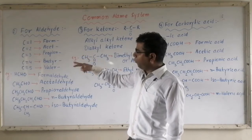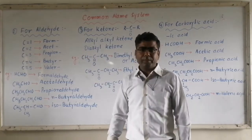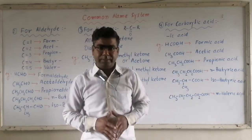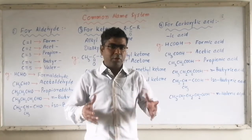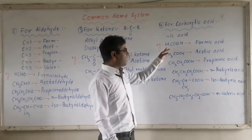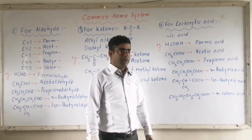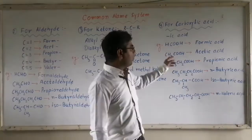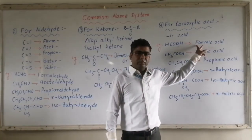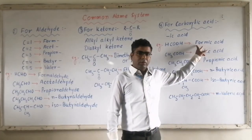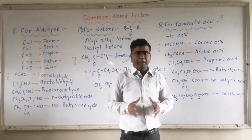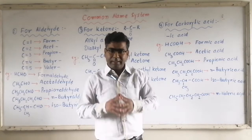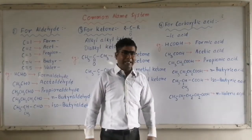With the given terms, you have to add 'ic acid.' The simplest member is HCOOH — for one carbon, we use the term 'form,' and with 'form' we add 'ic acid,' so the compound name will be 'formic acid.' You know its source — 'formica' or 'formicus' stands for red ants. It is secreted by red ants, so the compound name is formic acid.